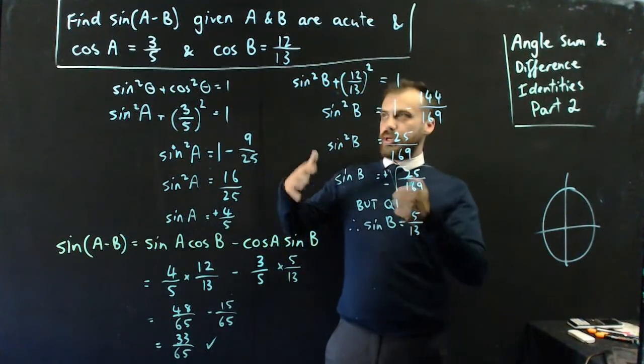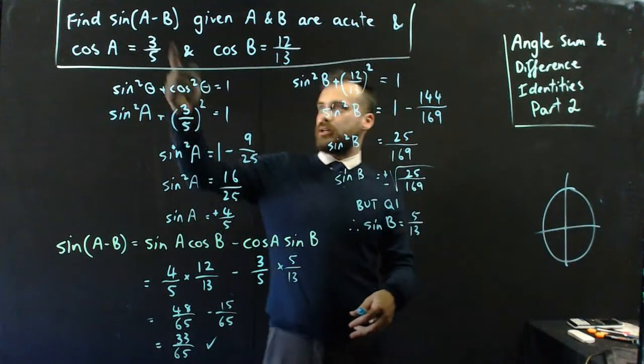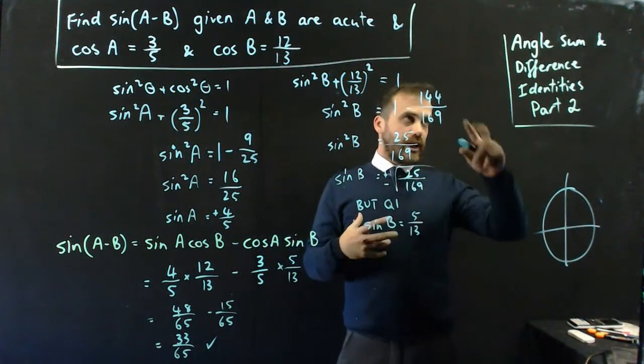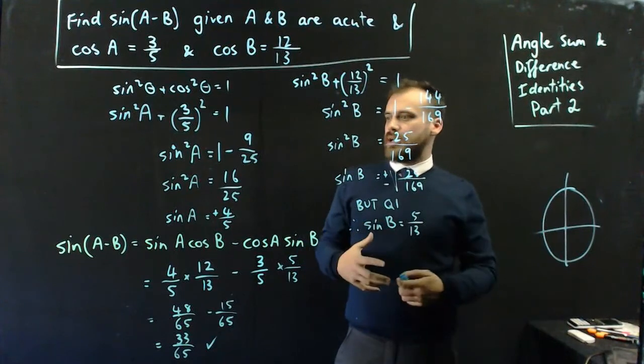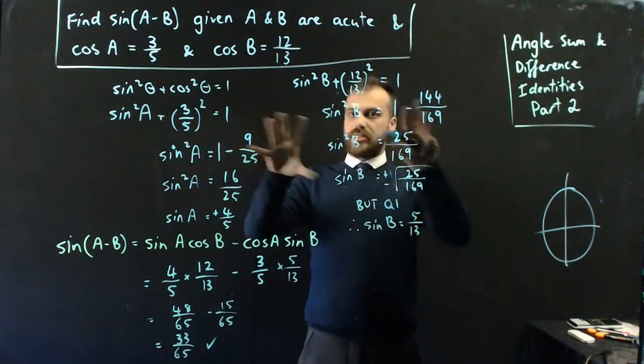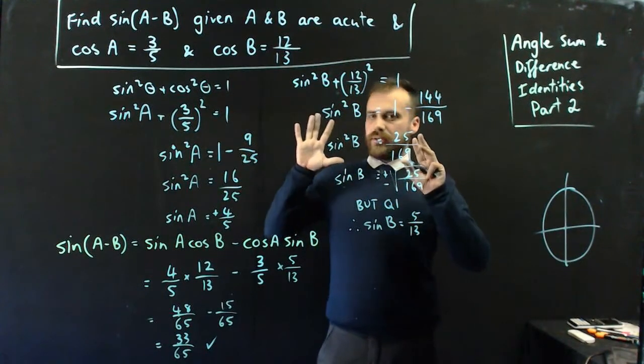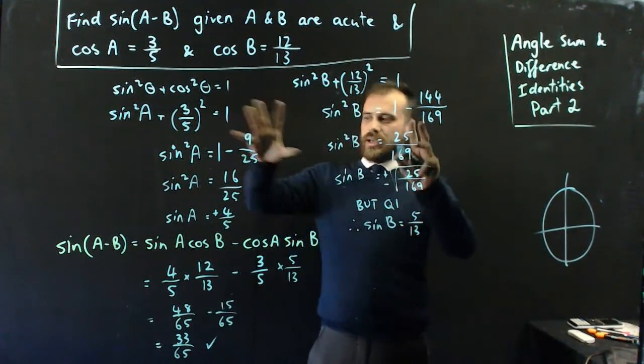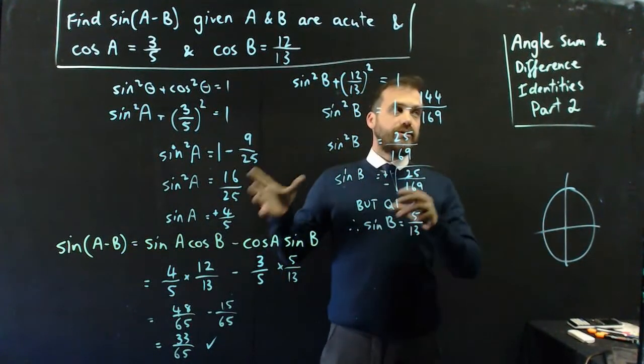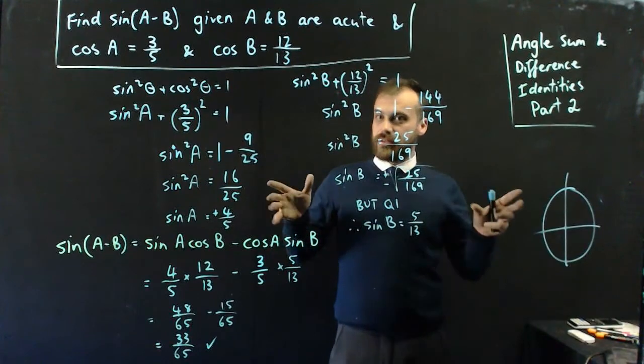Now, obviously, this question could take a lot of different forms. That could be a plus. That could be a cosine. We've got four angle sum and difference identities. There might be some sort of tan ratio thrown in that allows you to get to these things. But use your Pythagorean identities, and then see the angle difference, angle sum or difference, and then get to work.